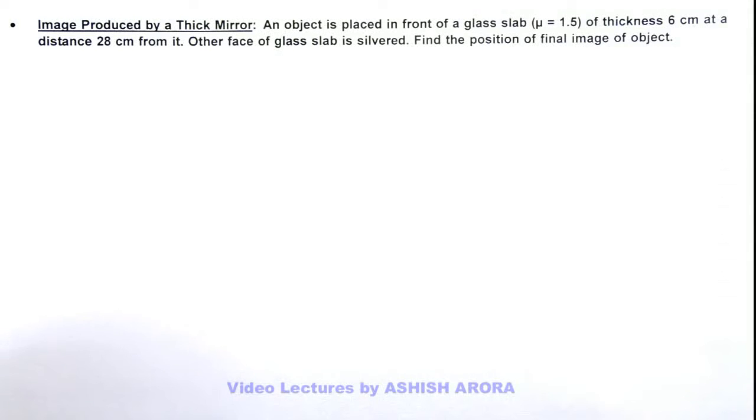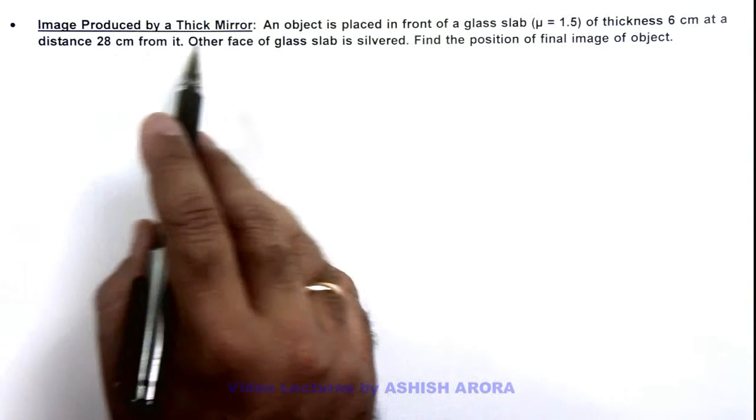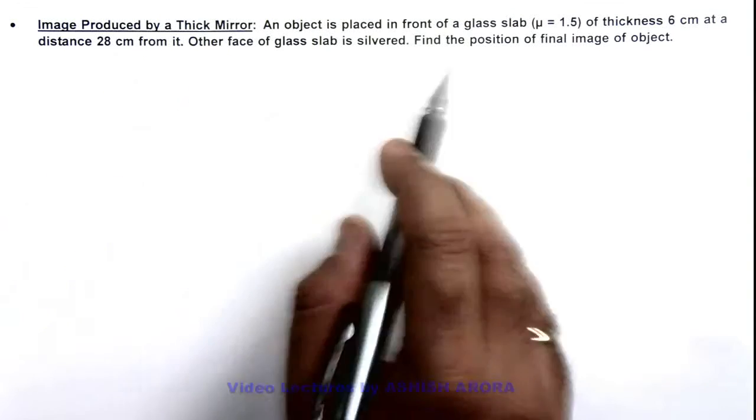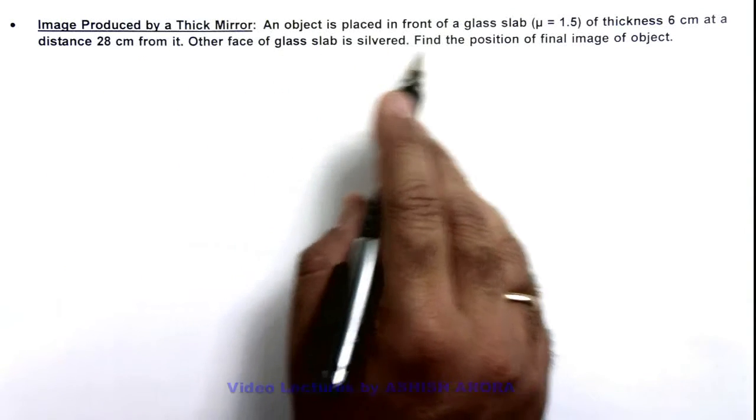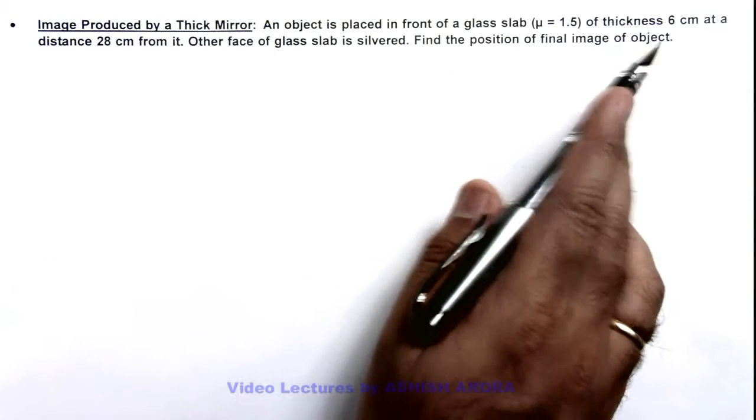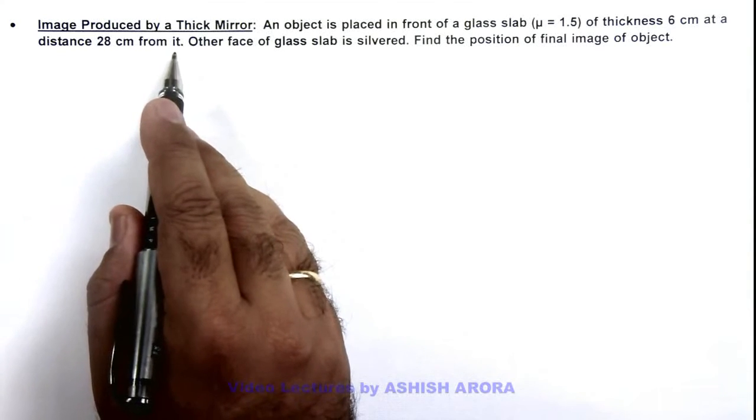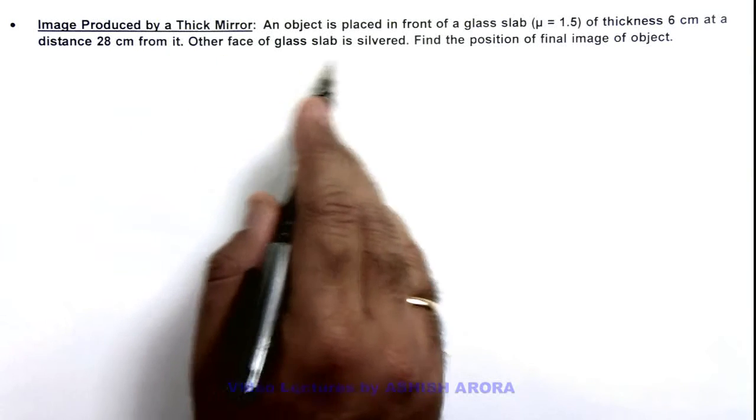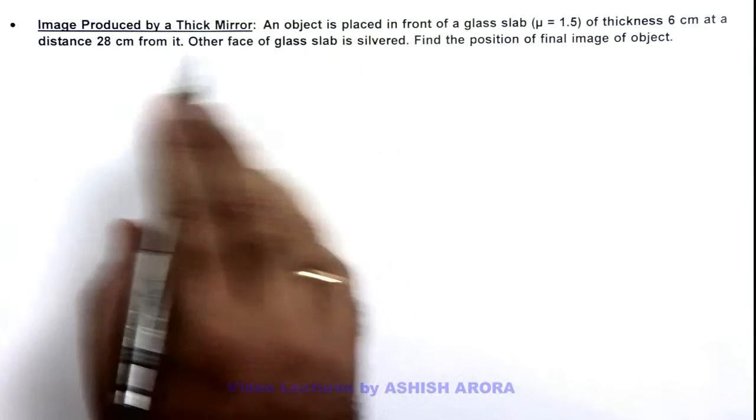In this illustration, we'll discuss the image produced by a thick mirror. Here we are given that an object is placed in front of a glass slab of thickness 6 centimeters at a distance of 28 centimeters from it, and the other face of the glass slab is silvered, making it a thick mirror.